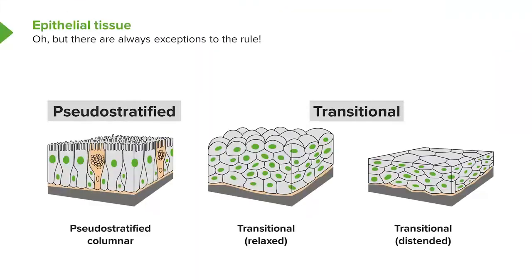The other two diagrams show the epithelium of the bladder or urinary passages, called transitional epithelium. When the bladder is relaxed or emptied, cells adopt a stratified cuboidal appearance. But when the bladder distends and fills with urine, the surface cells tend to flatten out. The epithelium goes through a transition from one appearance to another depending on the state of the bladder — hence the name transitional epithelium.